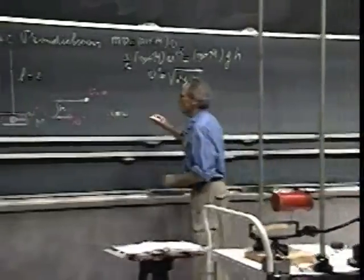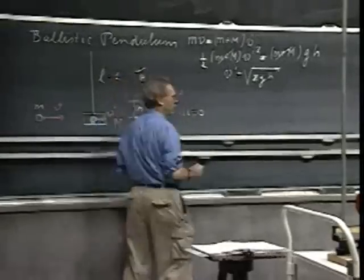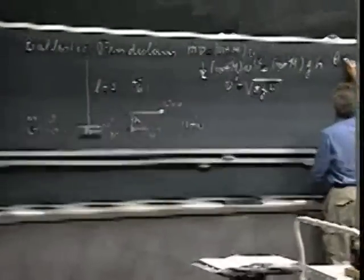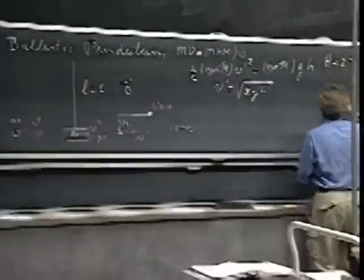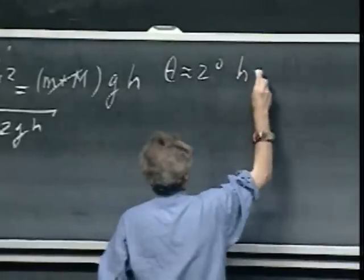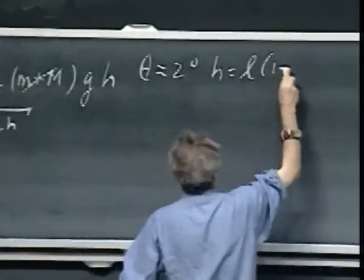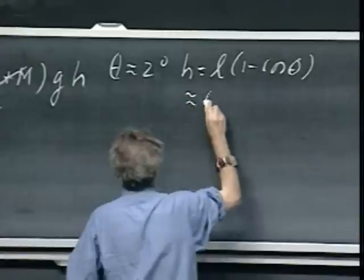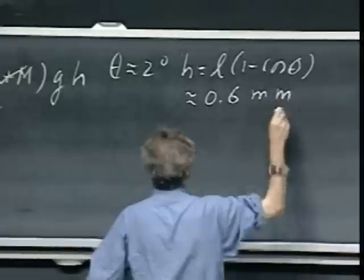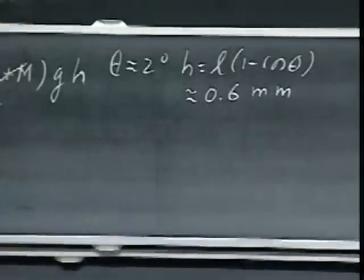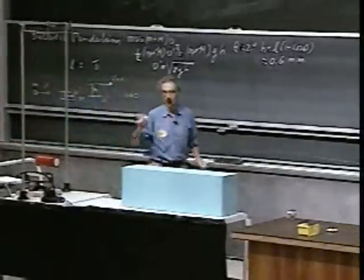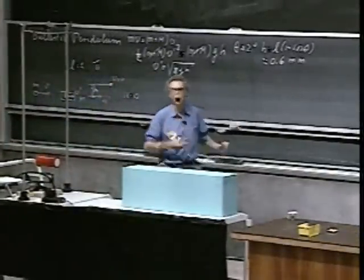Suppose this angle theta, when the pendulum comes to a halt, is only 2 degrees. Then h, which is L times (1 minus cosine theta), is only 0.6 millimeters for a pendulum length of 1 meter. You can't even see it — it's invisible, let alone measure it to any degree of accuracy.